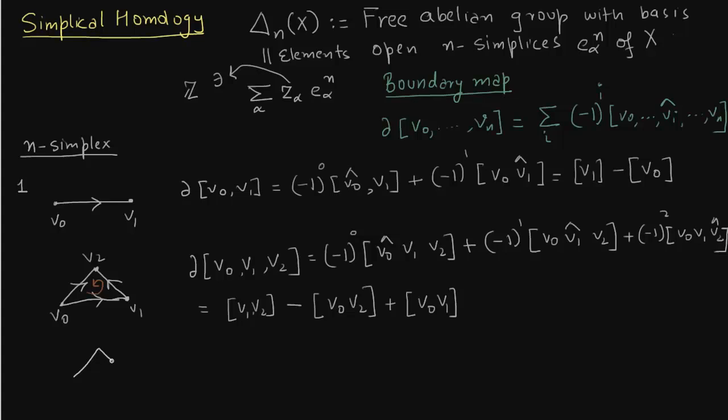So now I just want to draw a tetrahedron whose faces or whose boundary will be four triangles. So this I am not writing down but you can see it in Hatcher on page 105. Again the arrows are drawn from lower index to higher index. That is pretty much it.